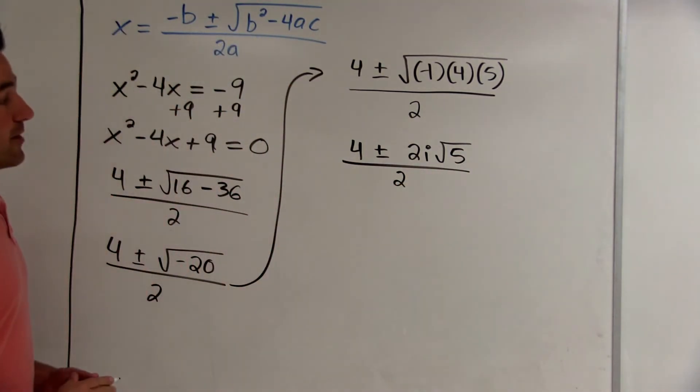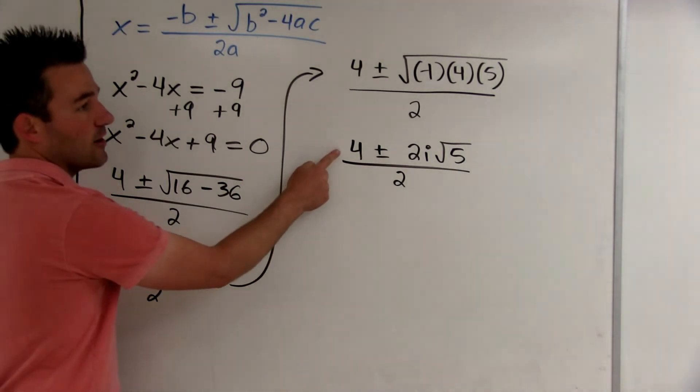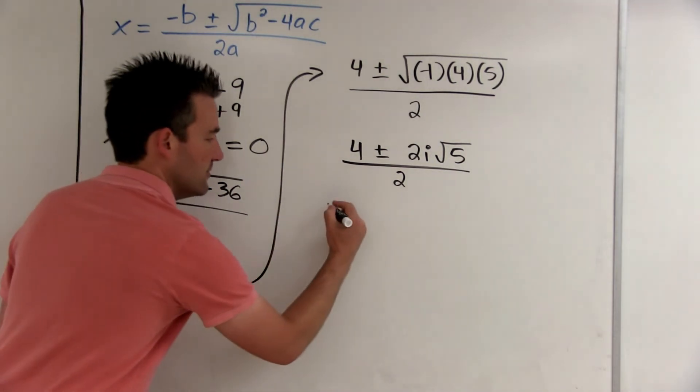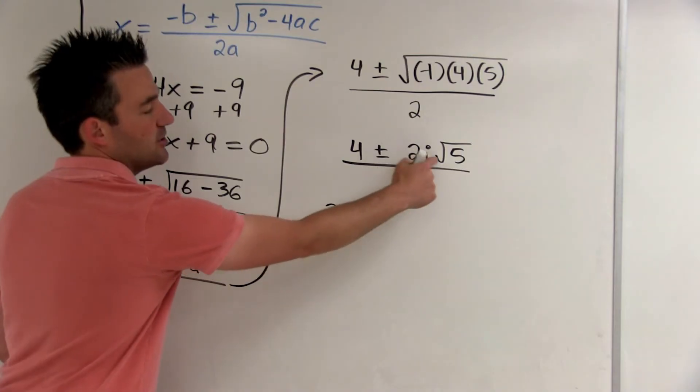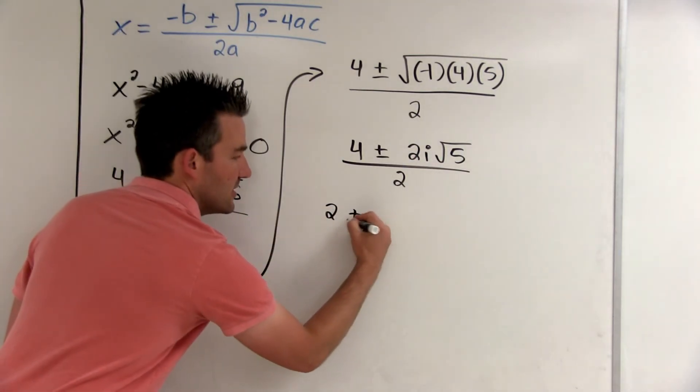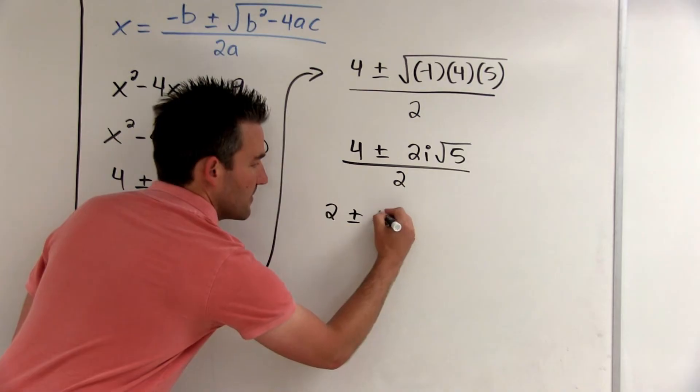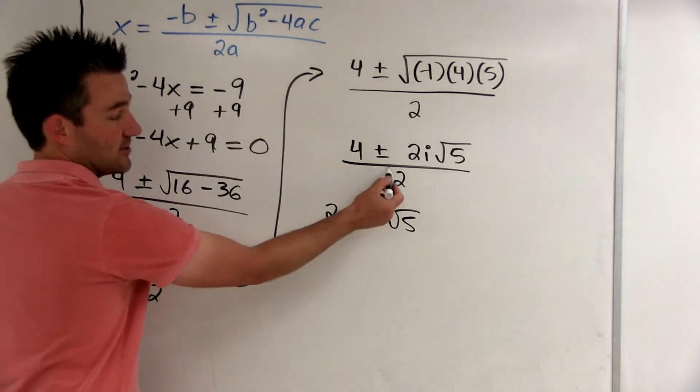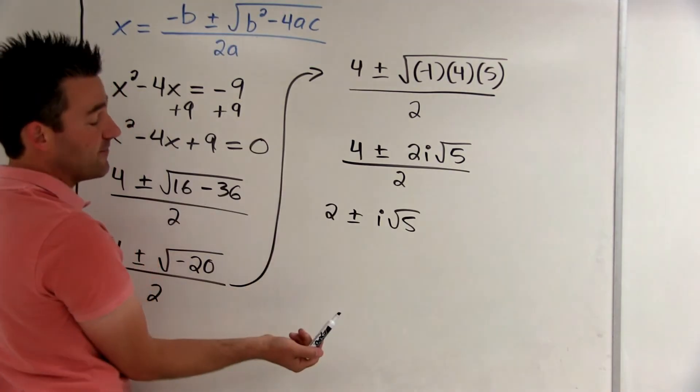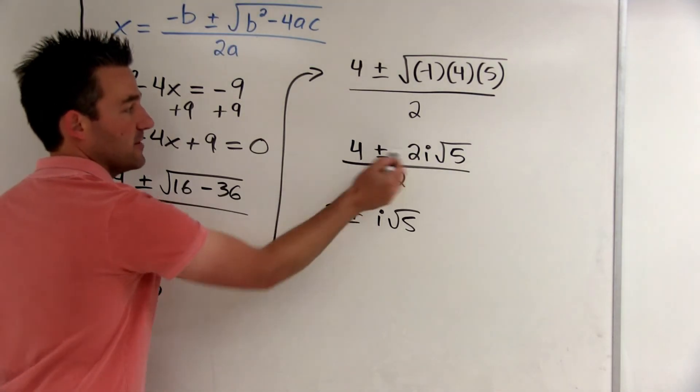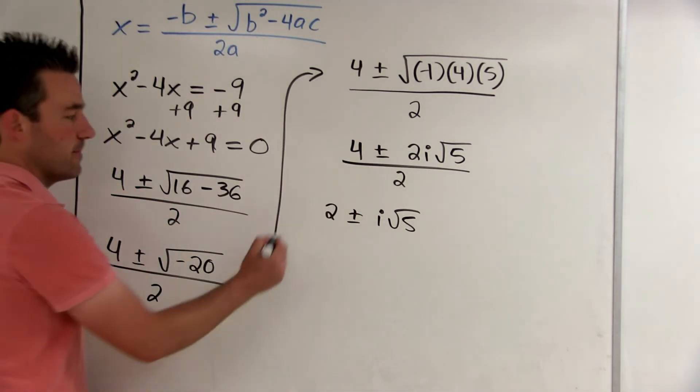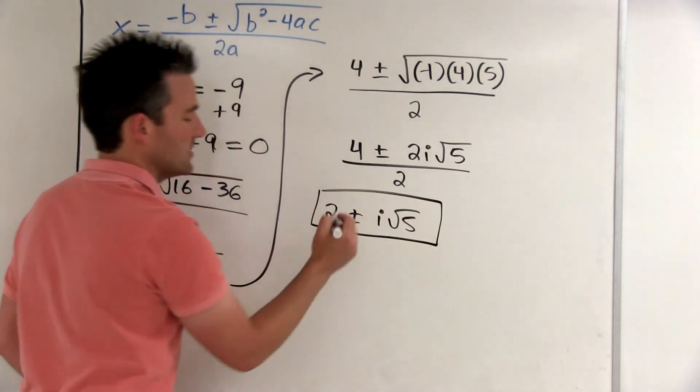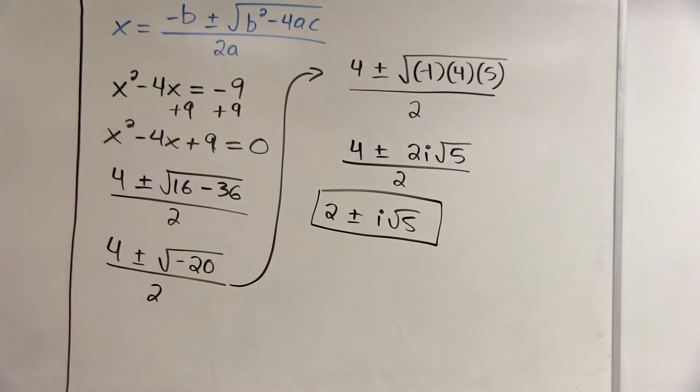When we look at these, 4 divided by 2 is 2. And 2i rad 5 divided by 2 is just i rad 5. So what we've done is we've canceled the 2 in the denominator, or we've divided out the 2 in the denominator from this binomial in the numerator. So there's our solutions: 2 plus i rad 5 and 2 minus i rad 5.